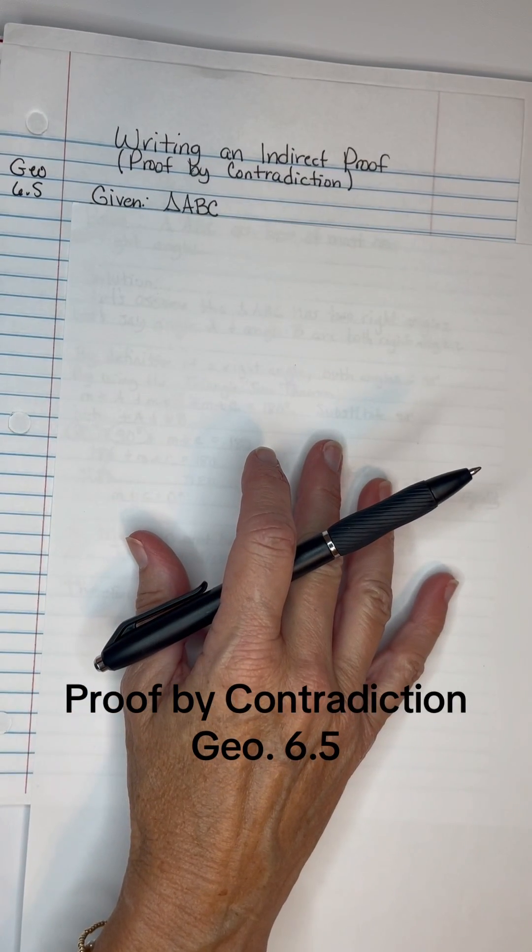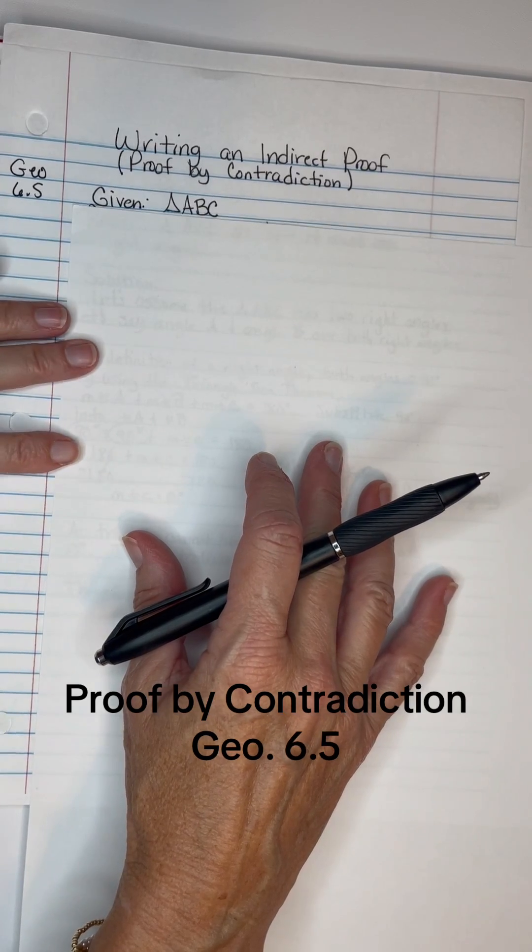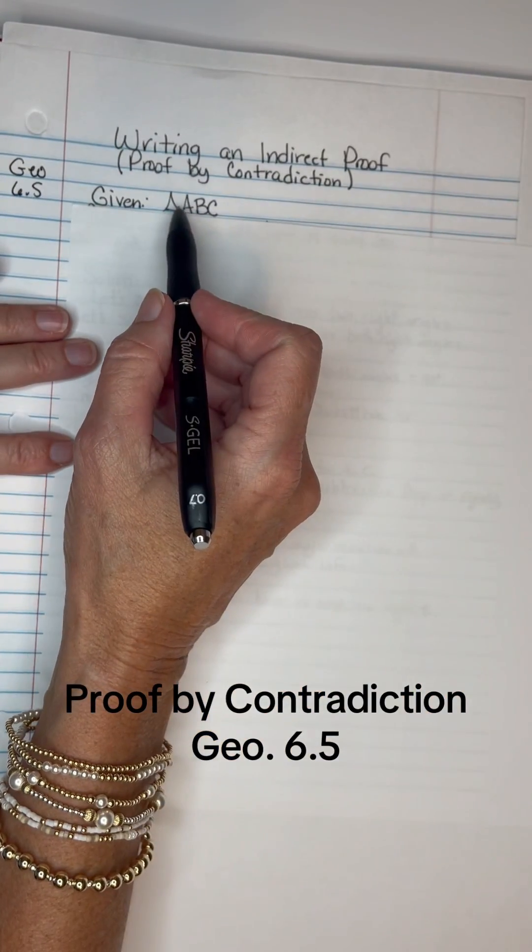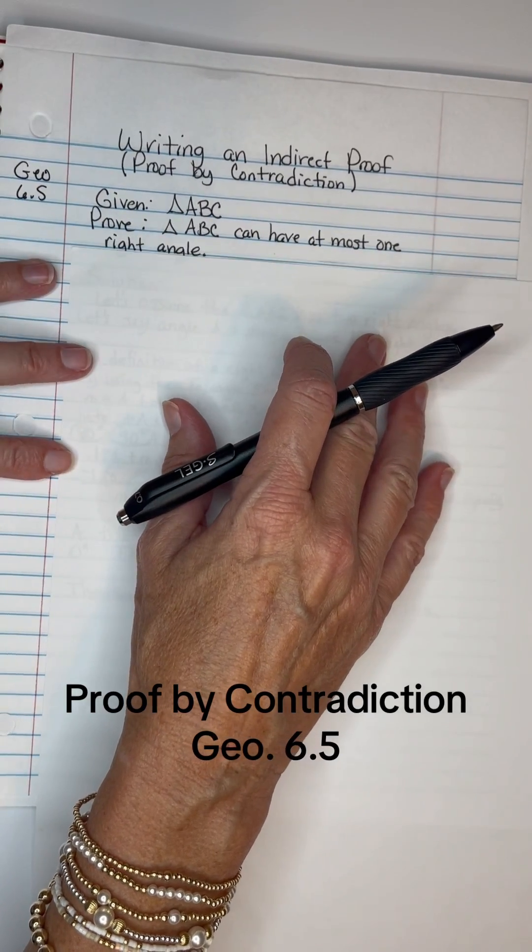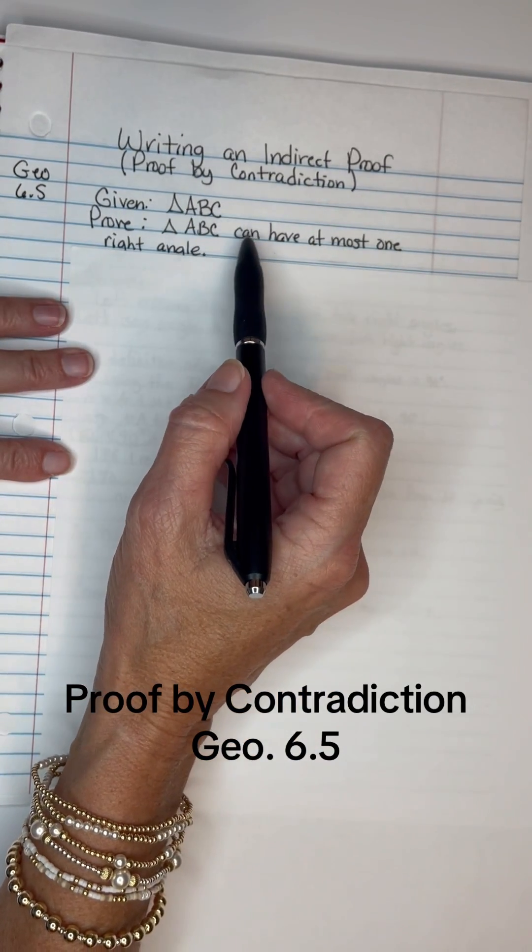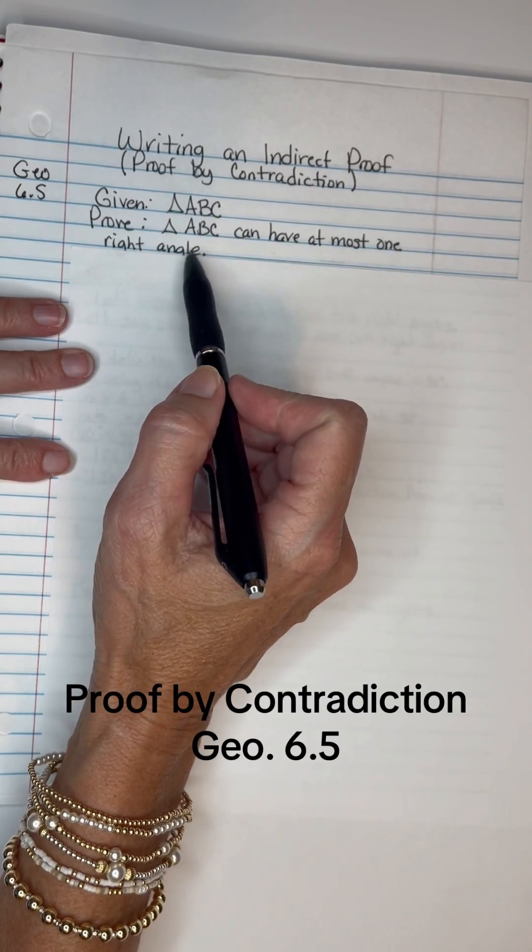Right here we're given the fact that we have a triangle and its vertices are A, B, and C. Our proof is, what we want to prove, is that triangle ABC can have at most one right angle.